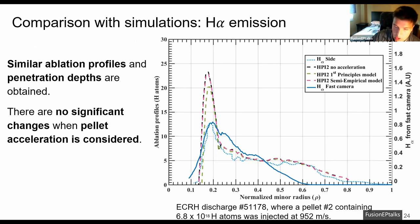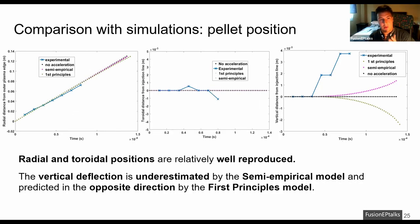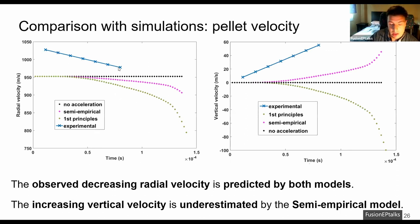And to conclude, I will compare the experimentally observed trajectories with the predictions from the model. We can conclude that the radial and toroidal positions are relatively well reproduced in the three cases, while the vertical pellet deflection is underestimated by the semi-empirical model and predicted completely in the opposite direction by the first principal model. If we go to the velocity, we find that the observed decrease in radial velocity is predicted by both models, while the increasing vertical velocity is again underestimated.